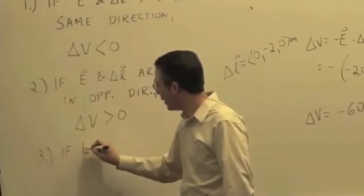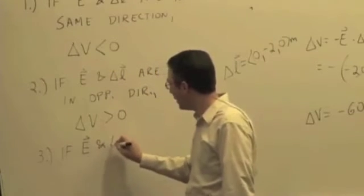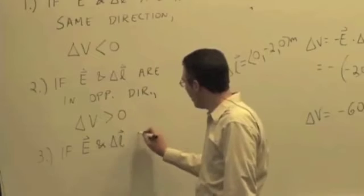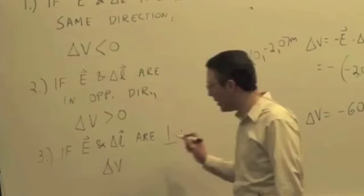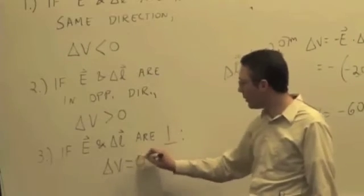If the electric field and delta L are perpendicular, then delta V was zero.